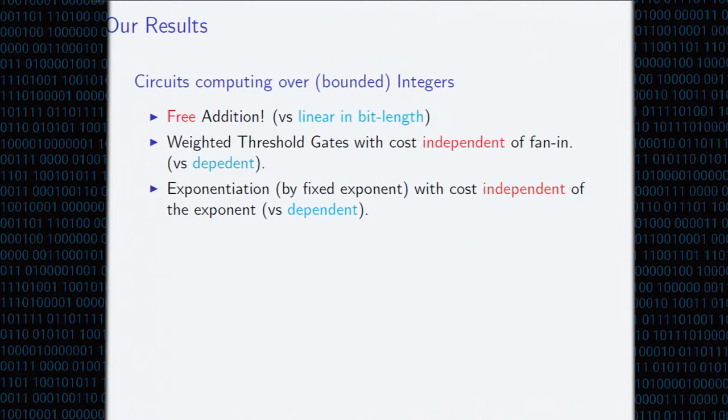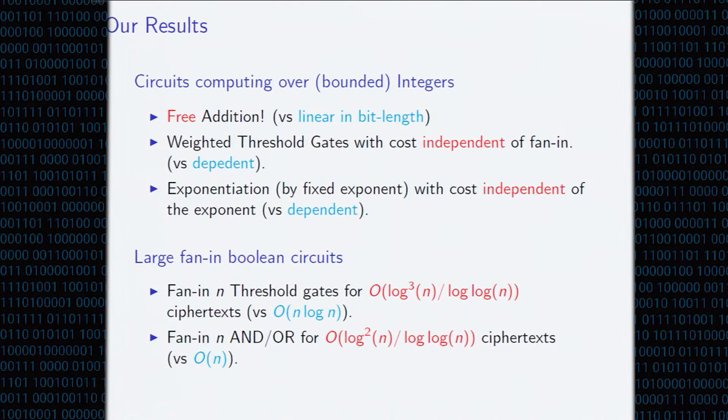So, a summary of what we achieve. If you're computing over a bounded domain over the integers, we can do addition. We show our scheme will allow you to compute addition with no cost in the garbled circuit size, versus a linear cost in pre-existing schemes. Weighted threshold gates can be garbled for cost that's independent of the fan in. You can exponentiate by any fixed exponent with cost that's independent of the exponent. And in the Boolean domain, threshold gates can be garbled for a log cubed number of ciphertext, as opposed to a super-linear number of ciphertext. And fan in AND gates can be garbled for a log squared number of ciphertext, as opposed to a linear number.